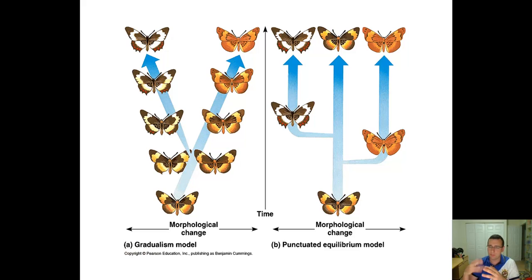Sometimes the change will be abrupt in what we call punctuated equilibrium, and that will happen because of really intense selection or really random events like genetic drift that will cause the population to suddenly shift to a certain look.